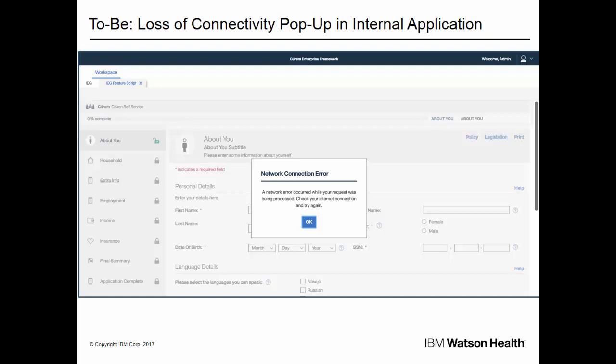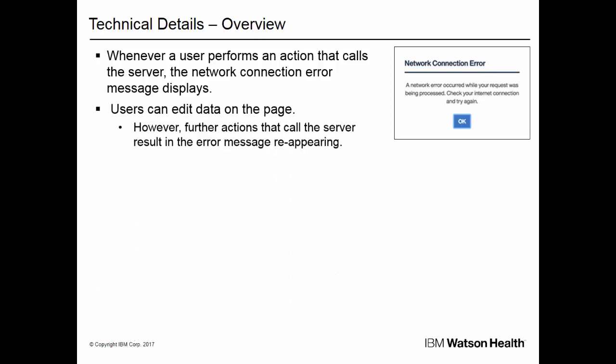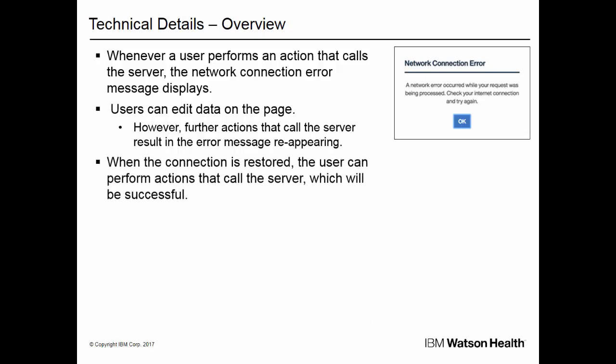This screenshot from version 702 displays the error message that users of the internal IEG application will see when network connectivity is lost. There are some subtle differences in the colors used, which ensures that the look and feel of the Network Connection Error modal dialog harmonizes with other dialogs in the internal SPM application. From a technical standpoint, whenever a user performs an action that calls the server, the Network Connection Error message displays. Actions that call the server include selecting buttons such as Next or Submit, and selecting links to delete and add entries. After dismissing the message, users can edit data on the page. However, further actions that call the server result in the error message reappearing. When the connection is restored, the user can perform actions that call the server, which will be successful.